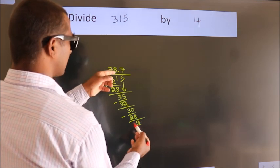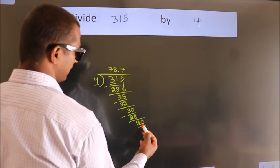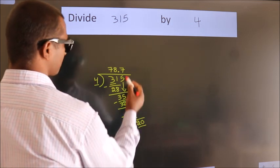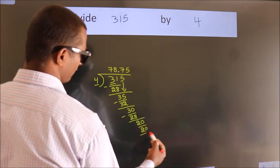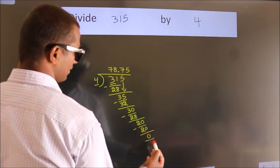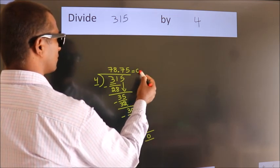After this, we already have the decimal, so directly take 0, giving us 20. When do we get 20 in the 4 table? 4 times 5 equals 20. Now we subtract. We get 0. We got remainder 0, so this is our quotient.